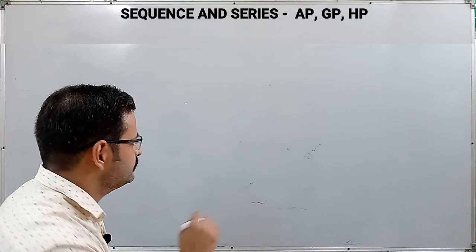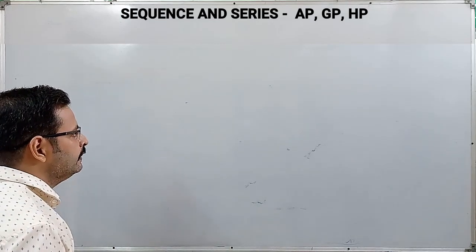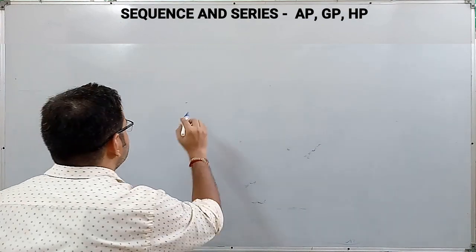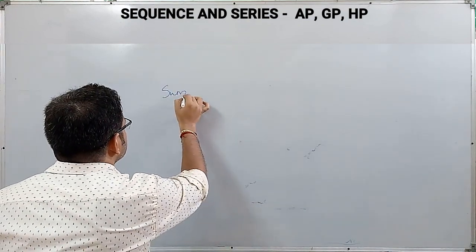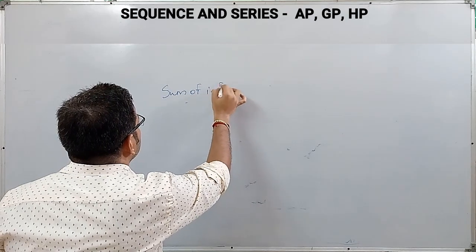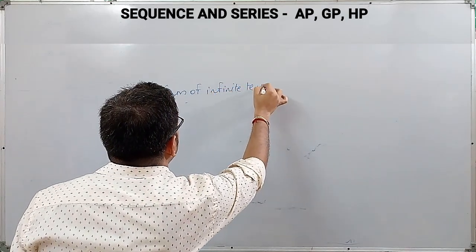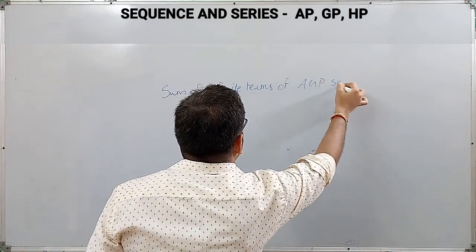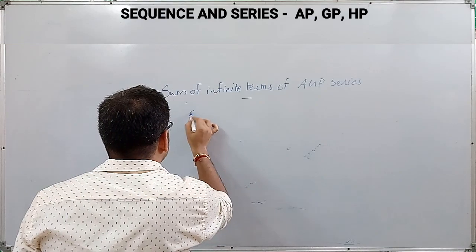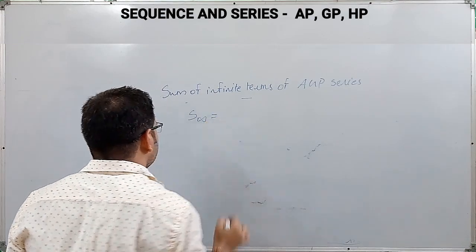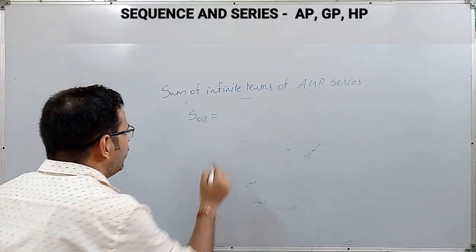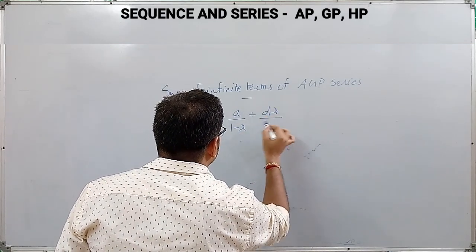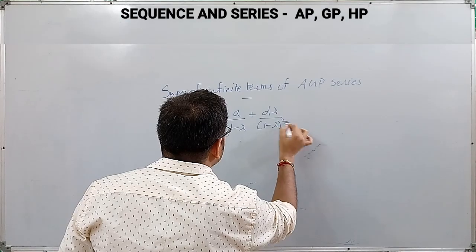One more useful formula: the sum of infinite terms of an AGP (Arithmetico-Geometric Progression) series is S∞ = a/(1 − r) + dr/(1 − r)².